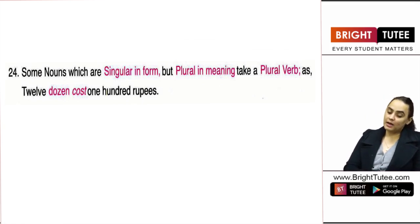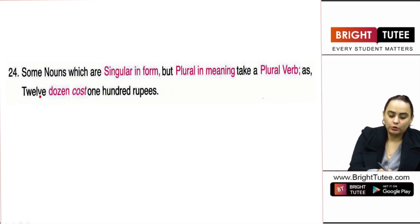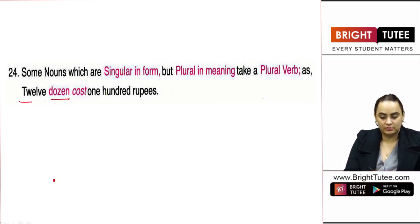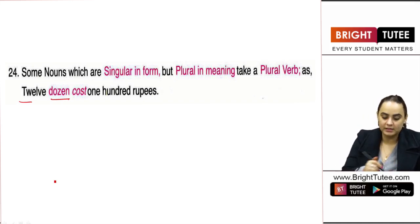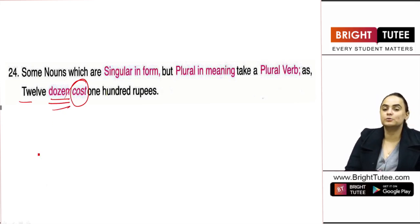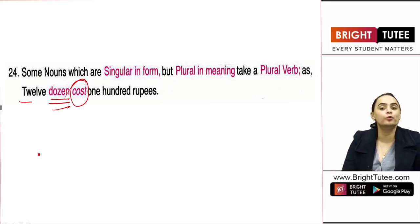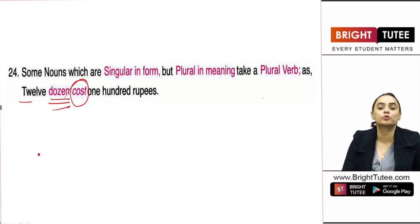There are also some nouns which are singular in form but the meaning is plural, and these take a plural verb. For example: 'twelve dozen' — dozen seems to be a singular unit but it contains 12, so it is plural in nature. Therefore, rather than using 'costs,' we use 'cost' — 'twelve dozen cost one hundred rupees.'